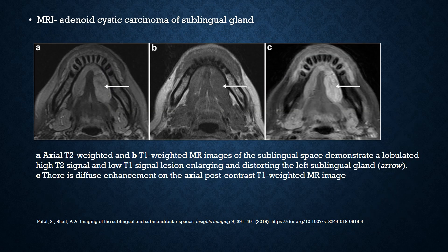This is an example of an adenoid cystic carcinoma of the sublingual salivary gland, indicated by the white arrow. The image in the sublingual space demonstrates a lobulated mass with high T2 signal and low T1 signal, enlarging and distorting the entire left sublingual gland. There is also diffuse enhancement seen on the post-contrast image.